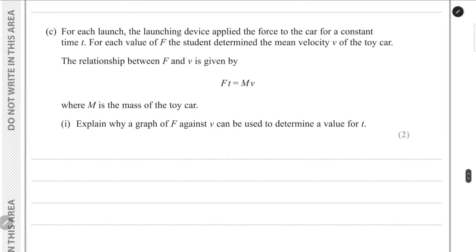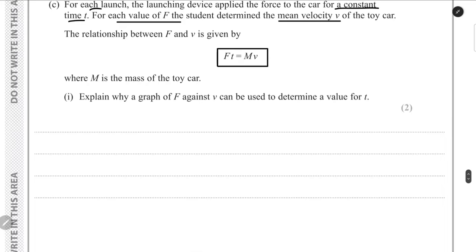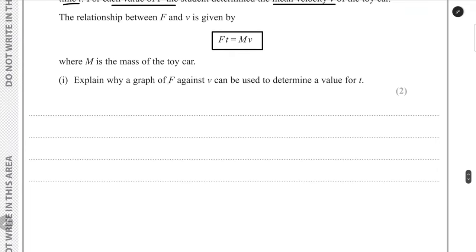For part C, the launching device applies force for a constant time T, and the student determines the mean velocity for each force value. The relation is F × T = m × v, so F = (m/T) × v. Since T is constant and m is constant, this compares to y = mx — a straight line through the origin. A graph of F against v can be used to determine T from the gradient.